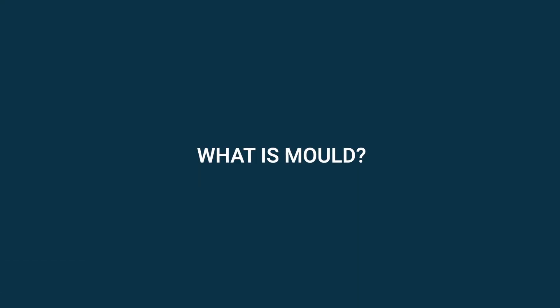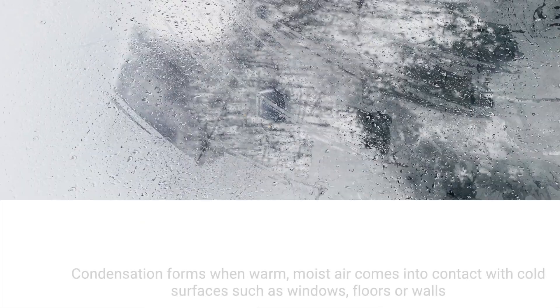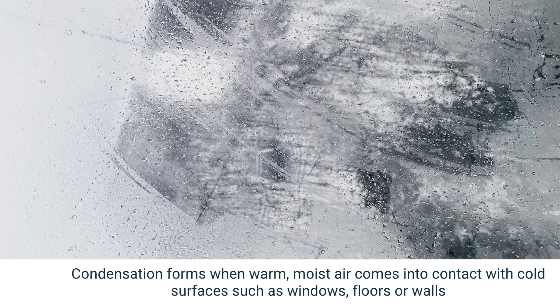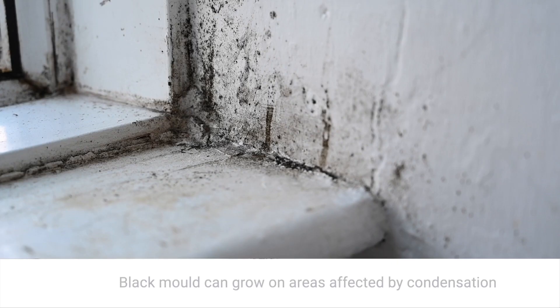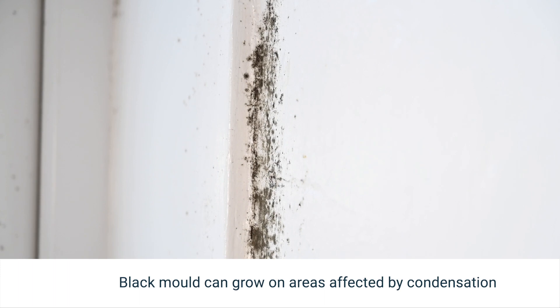What is mould? Condensation forms when warm, moist air comes into contact with cold surfaces such as windows, floors or walls. Black mould can grow on areas affected by condensation.